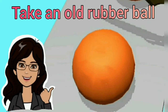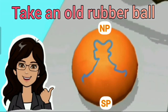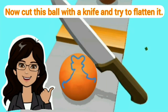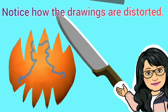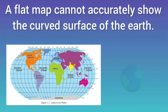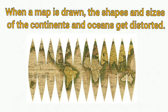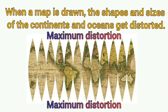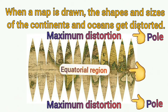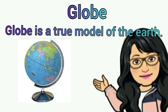To understand it better, you can take an old rubber ball and draw whatever you like all over it. You may also mark the north pole and the south pole on it. Now cut the ball with a knife and try to flatten it — you can notice how the drawings are distorted. Similarly, a flat map cannot accurately show the curved surface of the earth. The maximum distortion occurs in the regions around the poles, while the equatorial region can be shown with reasonably less distortion.